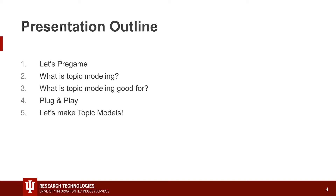Our outline for today: we're going to pregame, where I'll walk you through some of those links and how to get yourself set up — get access to Research Desktop, and then get the data you need to follow along using a Jupyter notebook to do some topic modeling. After that we'll go into more detail about what topic modeling actually is. Part of the reason we're doing the pregame first is because some of the stuff you bring over takes a little bit of time to load off of Box onto Research Desktop.